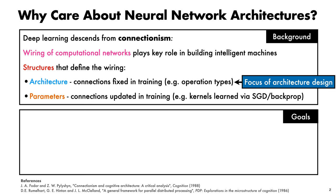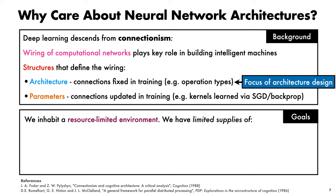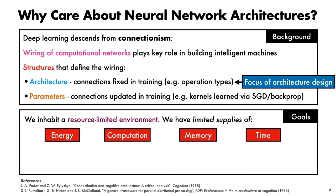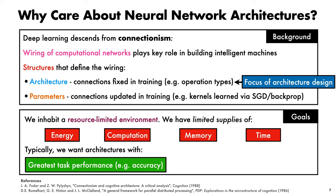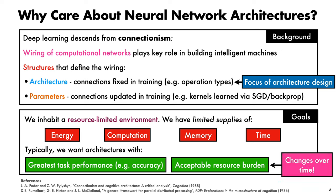When thinking about the goals of network architectures, it's worth reminding ourselves that we inhabit a resource-limited environment. We have limited supplies of energy, computation, memory, and time. Typically, what we want from our architectures is the greatest possible task performance at an acceptable resource burden. A key point to note is that, thanks to Moore's law, the rise of GPUs, and other hardware-related factors, what constitutes an acceptable resource burden changes over time.